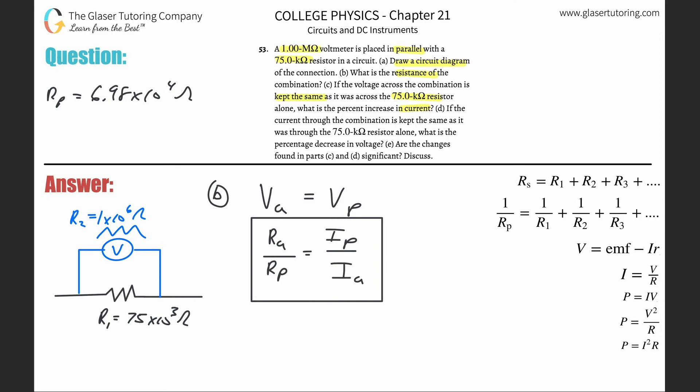So why don't we calculate and let's see what happens. So the resistance alone was just the 75 times 10 to the three, then divided by the resistance in parallel now, which is 6.98 times 10 to the fourth, is equal to IP over IA. And let's see what that works out to be. So 75 times 10 to the third divided by 6.98 times 10 to the fourth. And here we go. We get a value about 1.075. Now this is how many times it has increased.